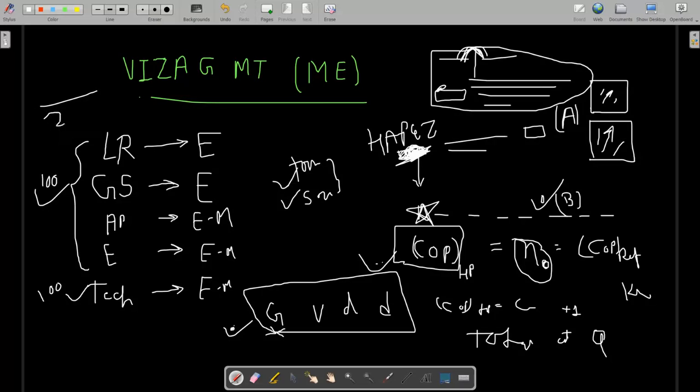If you want to know what is the expected cutoff, from my point of view, the cutoff for open general category is around 160 plus you can expect. Below this, do not expect 160 because there is no negative marking. As you have seen in Coal India, it is 200 marks and time more than this - three hours - and here only two and a half hours. In Coal India for mechanical, 154 cutoff, and vacancies were more. But here vacancies are less in VIZAG, so we can expect at least 160 plus as the safe score.